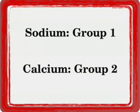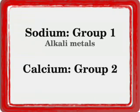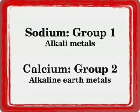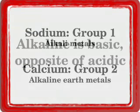One element is sodium, which is in Group 1. The other is calcium, which is in Group 2. Group 1 is called the alkaline metals, and Group 2 is called the alkaline earth metals.